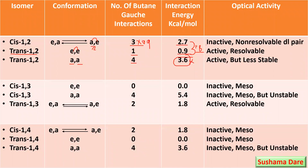Regarding optical activity: cis-1,2-dimethylcyclohexane is optically inactive because it exists as a non-resolvable DL pair, while trans-1,2-dimethylcyclohexane is optically active and exists as a resolvable DL pair. Now for cis-1,3-dimethylcyclohexane and trans-1,3-dimethylcyclohexane: for cis-1,3, the possible conformers are EE or AA, and for trans it is AE or EA. Both remain in equilibrium, so only one isomer is possible and both are interconvertible.